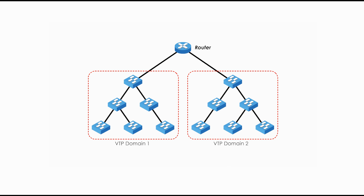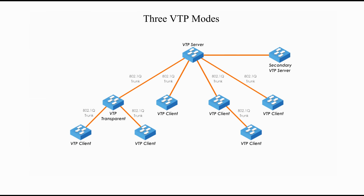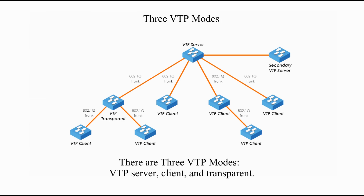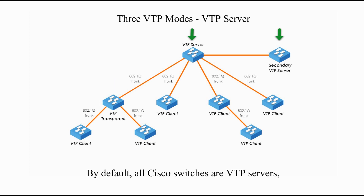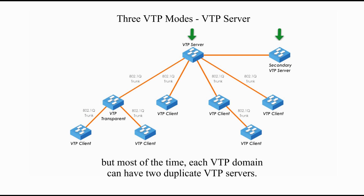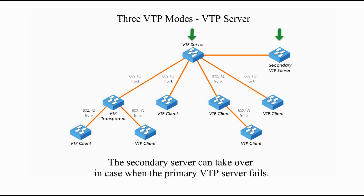Now let's talk about three VTP modes. There are three VTP modes: VTP server, VTP client, and VTP transparent. By default, all Cisco switches are VTP servers, but most of the time each VTP domain can have two duplicate VTP servers. The secondary server can take over in case the primary VTP server fails.